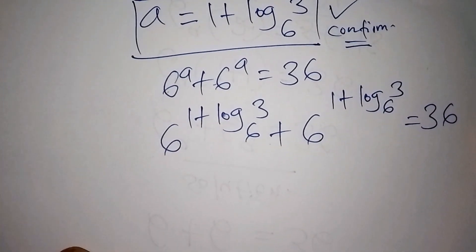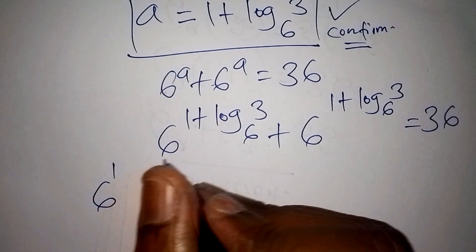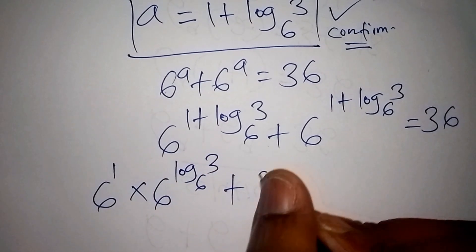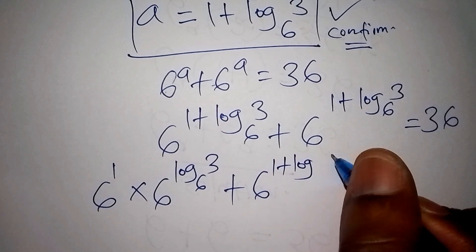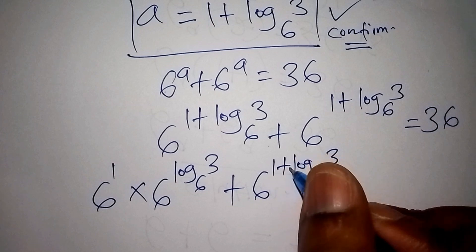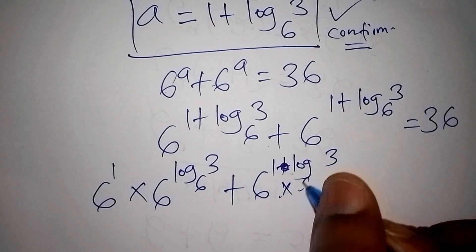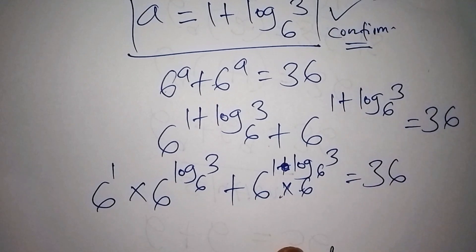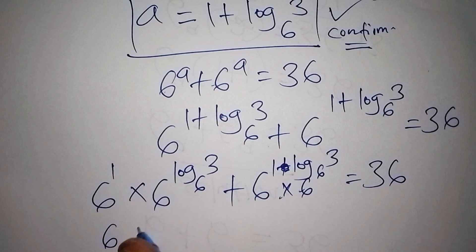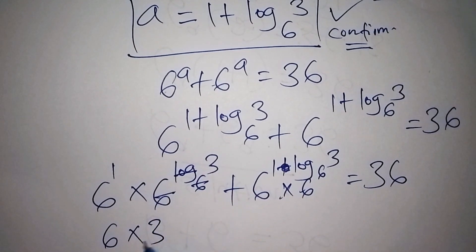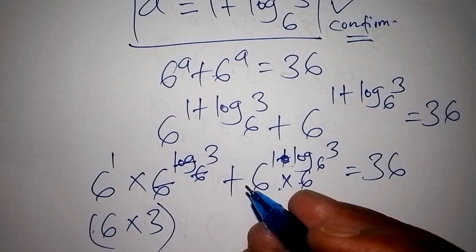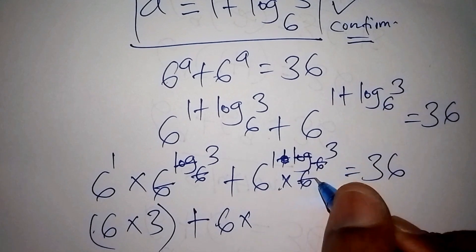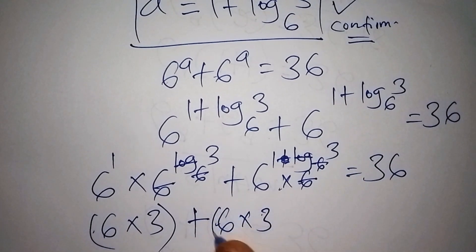Using the exponent addition rule, the plus becomes multiplication: 6 to the power of 1 multiplied by 6 to the log of 3 to the base of 6. Since 6^1 equals 6, and 6 to the log₆3 equals 3 (the base and log cancel), we get 6 multiplied by 3, plus 6 multiplied by 3, equal to 36.